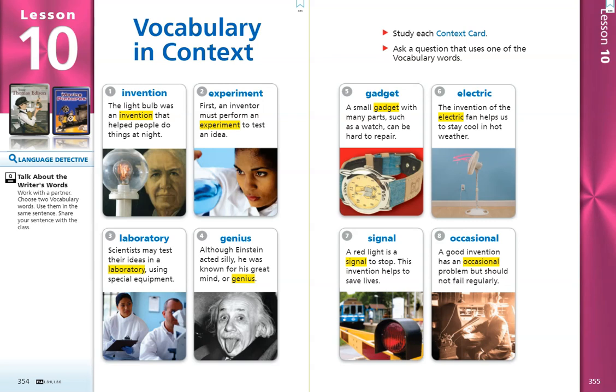Welcome to your Journey's Lesson 10 Vocabulary and Context Cards for Young Thomas Edison. Number 1. Invention. The light bulb was an invention that helped people do things at night.